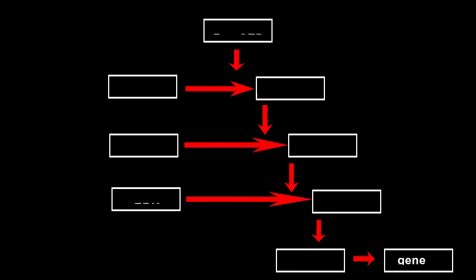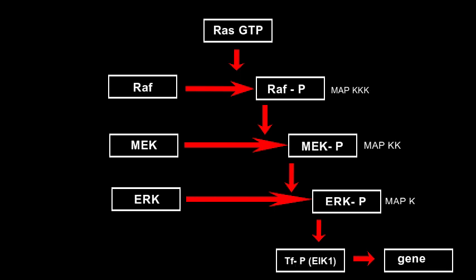The MAP kinase cascade is the mitogen-activated protein kinase cascade. Mitogens are signals that act from outside the cell to induce mitosis and cell division. Three kinases are involved: RAF1, MEK, and ERK. They form a cascade in which each kinase activates the next by phosphorylation. RAF activates MEK, MEK activates ERK, and ERK activates transcription factors.